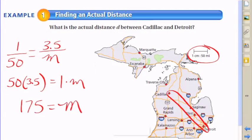Of course, divided by 1 is going to give me 175. So I'm estimating that the distance between Cadillac and Detroit is 175 miles.